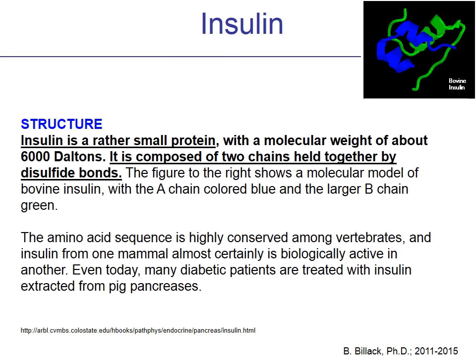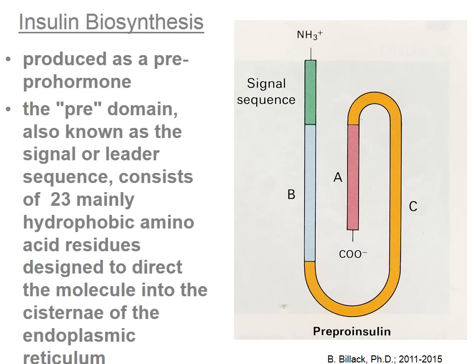Today in the U.S., recombinant human insulin is primarily what's used to treat diabetes, and animal sources are uncommon. The body makes insulin as a pro-hormone. Insulin is actually made as a longer pre-pro-insulin. The pre-domain contains a signaling sequence that helps target it to the right place within the beta cell.